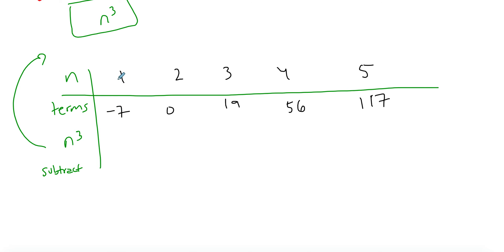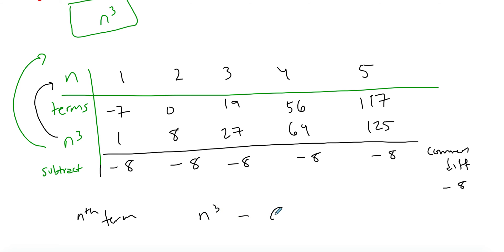The terms are 1, 2, 3, 4, 5. The numbers are -7, 0, 19, 56, and 117. Then I'll cube my numbers: 1, 8, 27, 64, and 125. Then I'll start subtracting the terms minus this. You get -8, -8, -8 everywhere. In this case I get a common difference of -8, and it's a linear term. So my final nth term formula is n³ - 8.